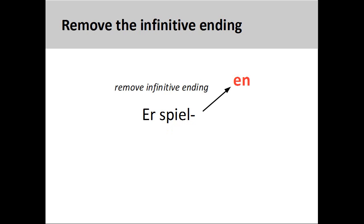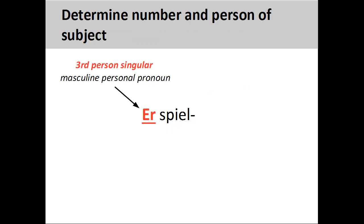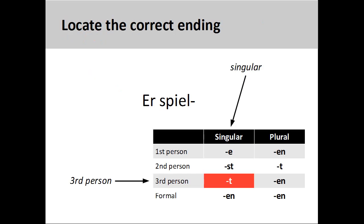To conjugate a verb, you first remove its infinitive ending. The next step is to determine both the number and person for the subject of the verb. Here, the subject is the third person singular masculine personal pronoun 'er', 'he'. We then need to find the correct third person singular verb ending on the chart. Here, the correct ending '-t' is marked in red.